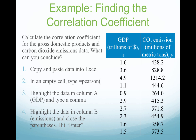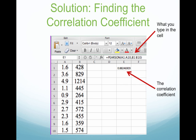Let's calculate the correlation coefficient for the gross domestic product and carbon dioxide emissions data. Copy and paste the data into Excel — GDP in one column, CO2 emissions in another. In an empty cell, type equals PEARSON, open parenthesis, highlight the data in column A, type a comma, highlight the data in column B, close the parenthesis, and hit Enter. Here in Excel, I got a correlation coefficient of approximately 0.882.